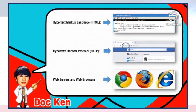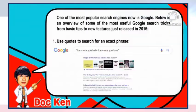A good example of HTTP in use is Facebook. Third, we have web servers and web browsers — good examples include Chrome, Firefox, Internet Explorer, and Safari. One of the most popular search engines now is Google. Here is an overview of some of the most useful Google search tricks, from basic tips to new features.